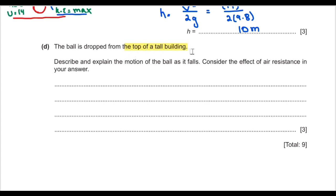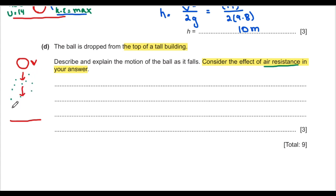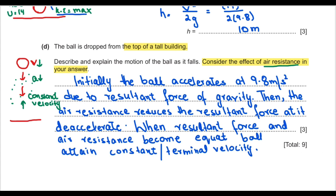Part d: a ball is dropped from the top of a tall building. Describe the motion considering air resistance. Initially the ball accelerates at 9.8 m/s² due to gravity. As velocity increases, air resistance increases, reducing the resultant force so the ball decelerates. When the downward gravitational force equals the air resistance, the ball reaches a constant terminal velocity.